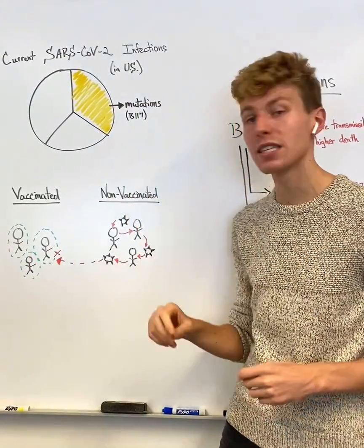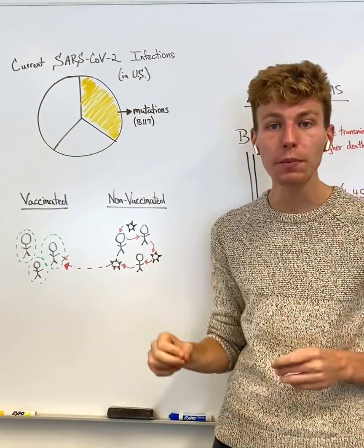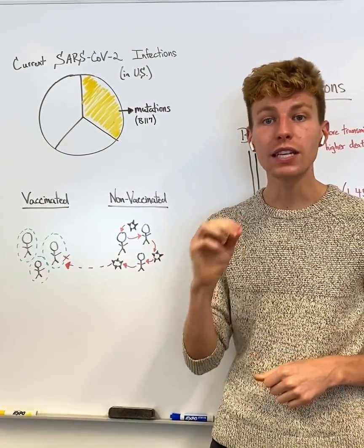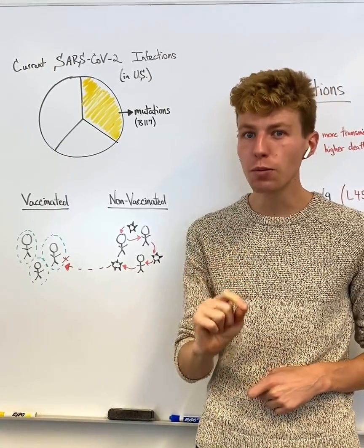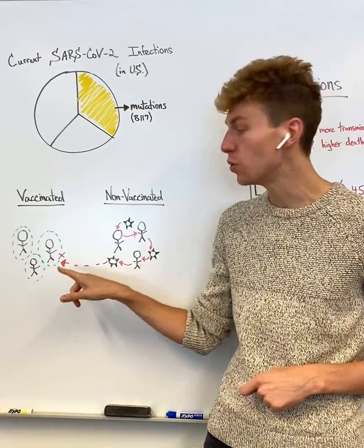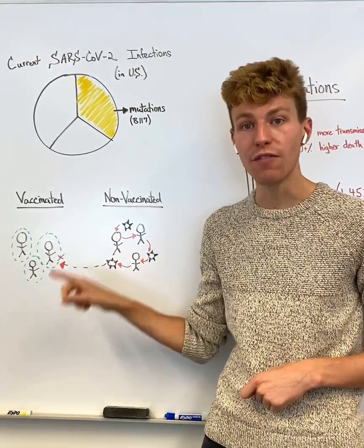But in non-vaccinated groups, we see that SARS-CoV-2 can continue to spread and replicate in these individuals. This can allow for mutations to occur on the spike protein, and if too many mutations occur, this could allow SARS-CoV-2 to escape the antibodies produced in the vaccinated group and infect them.